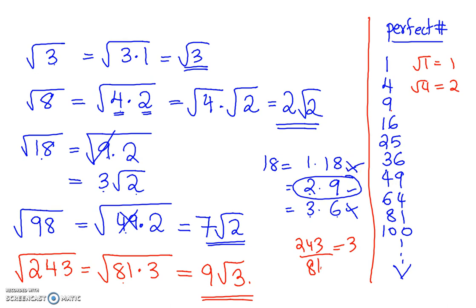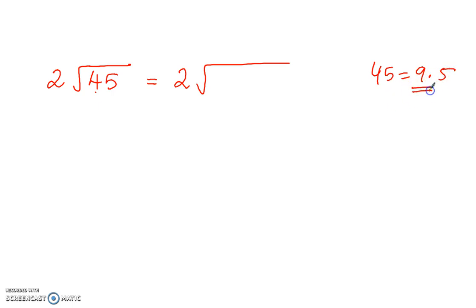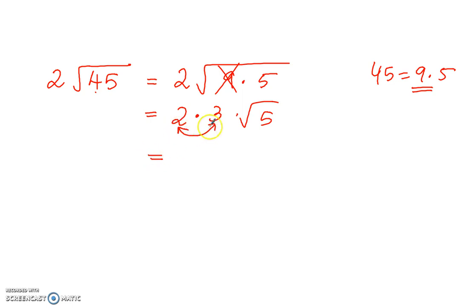Now, what if we have a coefficient before the radical, like 2 square root of 45? You would leave that coefficient 2 right there. In radical 45, you want to factorize 45 as a perfect number and another number. We know that 45 is 9 times 5, and 9 is a perfect number. So bring down the 2, square root of 9 is 3, and 5 stays in the radical. The operation between these two is multiplication, so you write 3 times 2 and combine it as 6 radical 5. That is how you simplify 2 radical 45 — it becomes 6 radical 5.